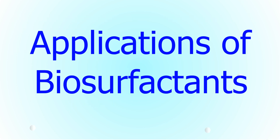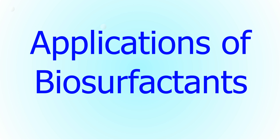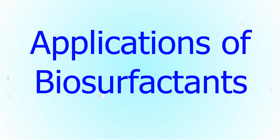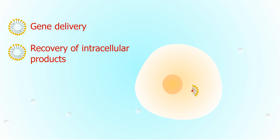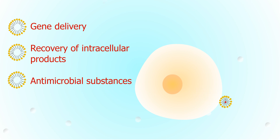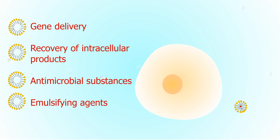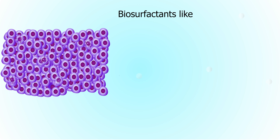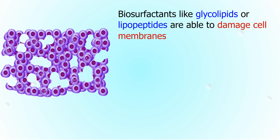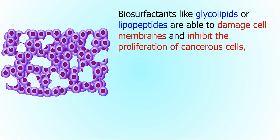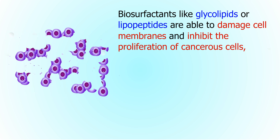Different applications of biosurfactants: first, in pharmaceutics — biosurfactants can be used for gene delivery and recovery of intracellular products, and can serve as antimicrobial substances and emulsifying agents. For example, biosurfactants like glycolipids and lipopeptides are able to damage cell membranes and inhibit the proliferation of cancerous cells, eventually leading to cell lysis.